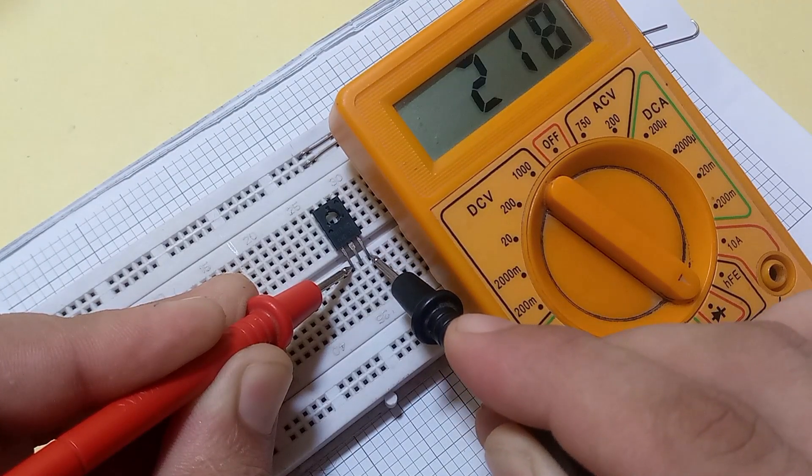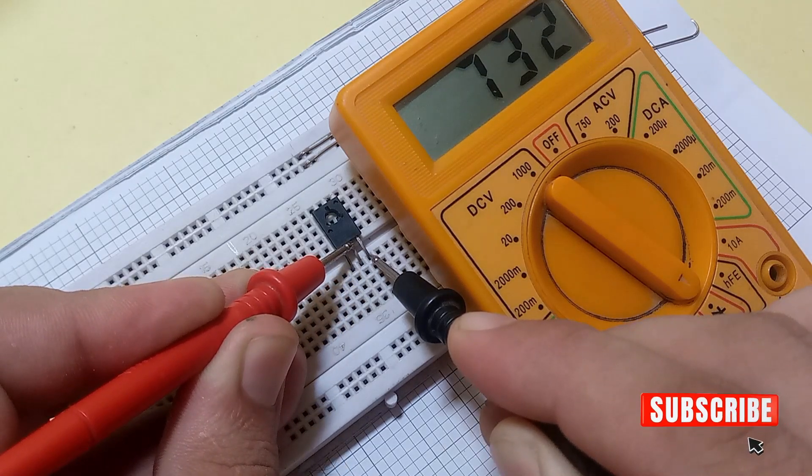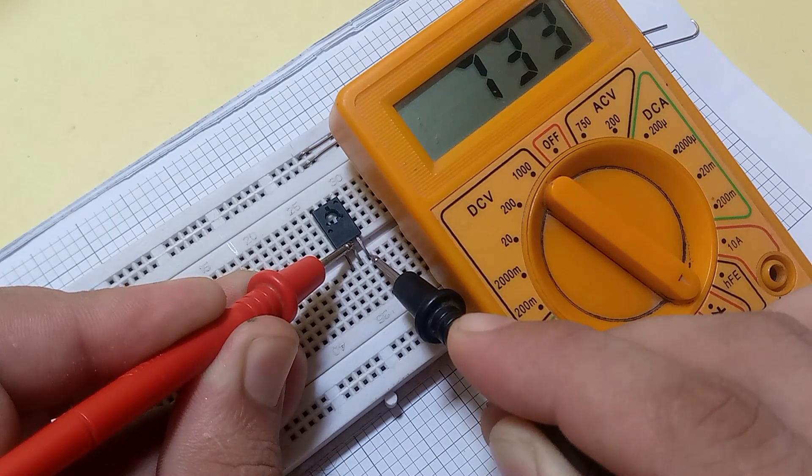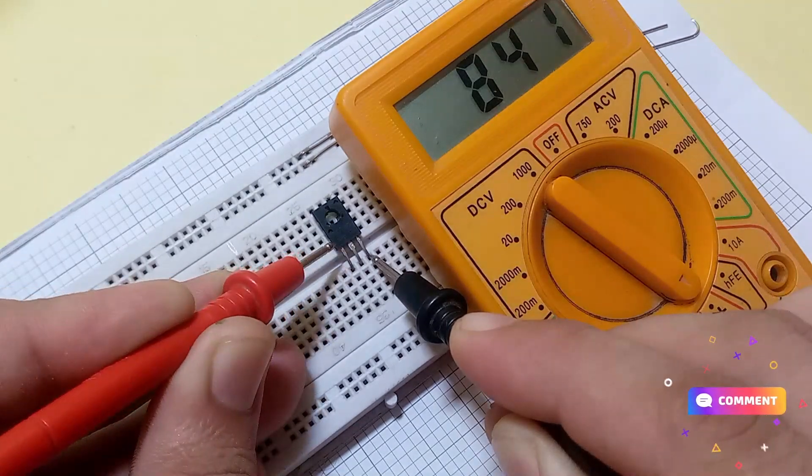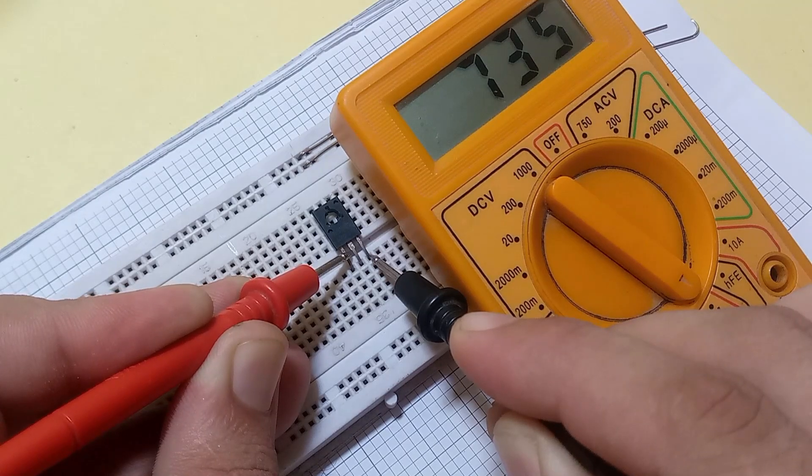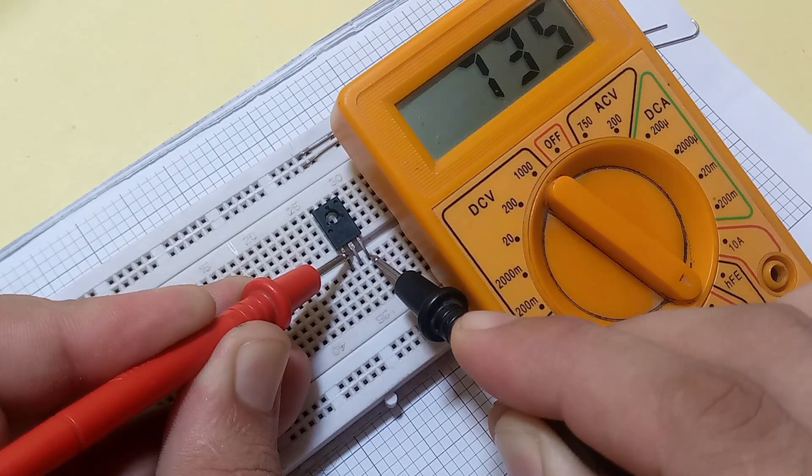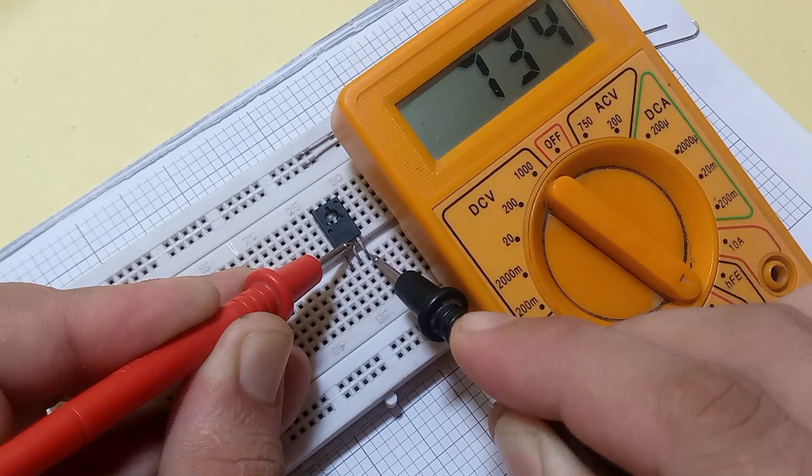So we must find out which one is common to the other pins. In simple words, on which pin the multimeter shows reading with the two other pins. As you see, the first pin from the right side is common to the other pins. It clarifies that base is the first pin from the right side.